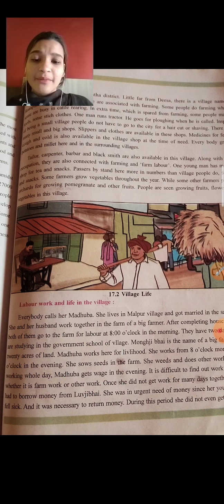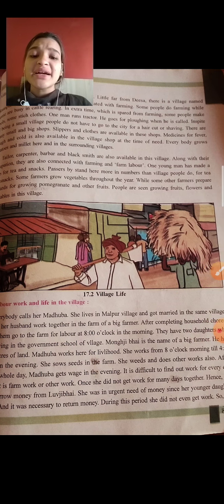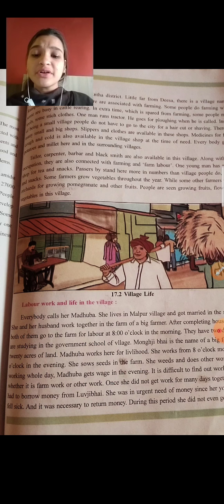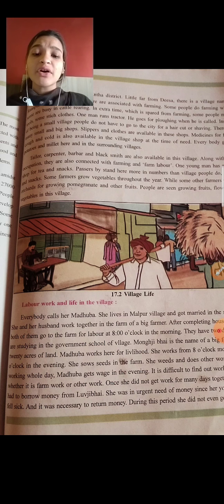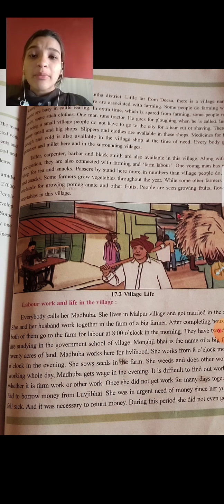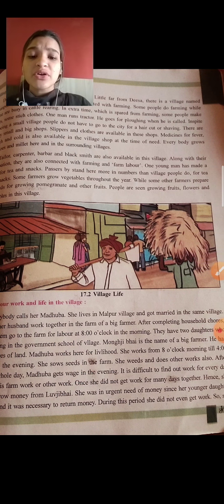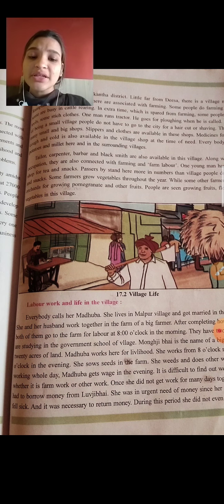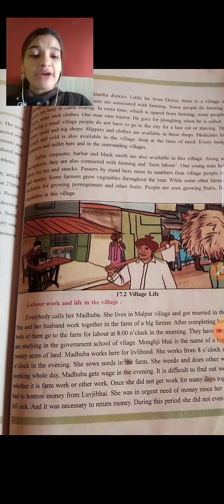Everybody calls her Maduba. She lives in a Malpur village and got married in the same village. She and her husband both work together on a big farm. If they don't have their own money or land, they do labor work. After completing household work, both of them go to the farm for labor at eight o'clock in the morning.